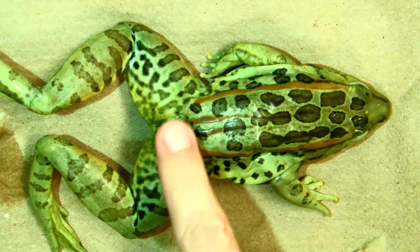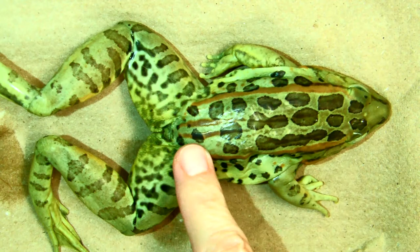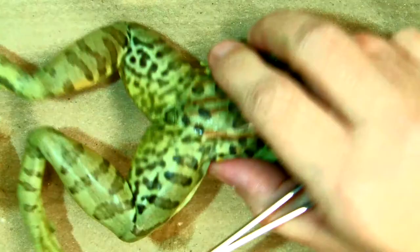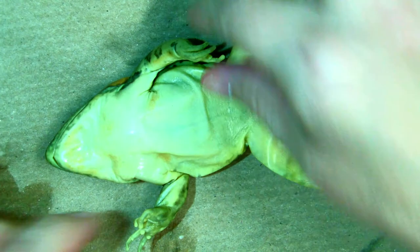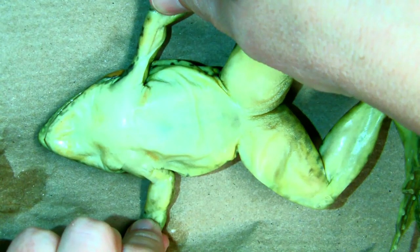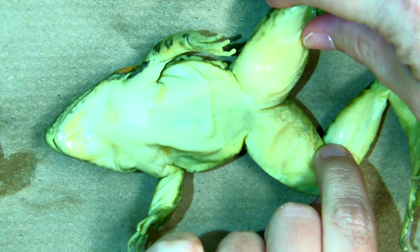This is the dorsal side. This is the ventral side. His forearms. His hind legs.